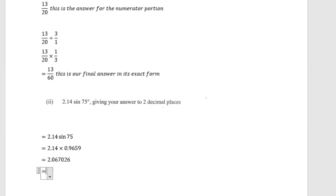What we get is 2.067026. The question asks us to write to two decimal places. Zero is our first decimal place, six is our second. We look at the number that follows — if it's greater than or equal to five, we add one to the last required decimal value. Six becomes seven, so our answer is 2.07.